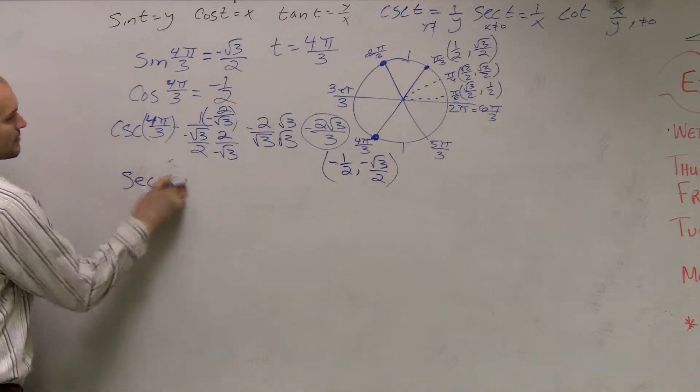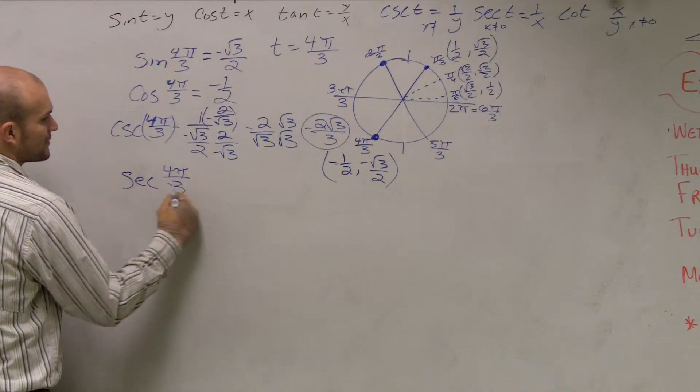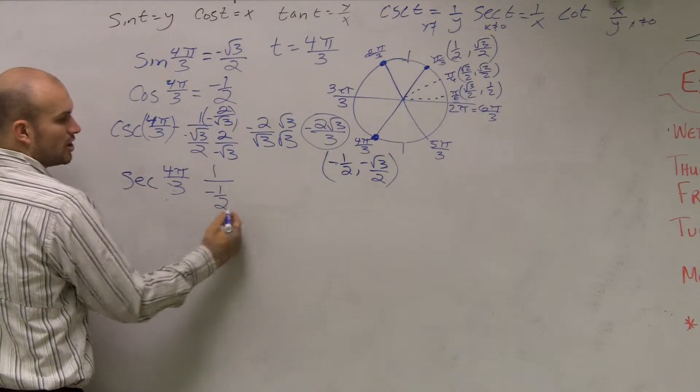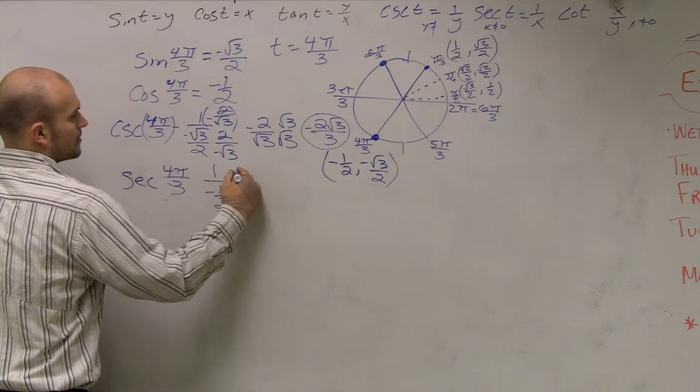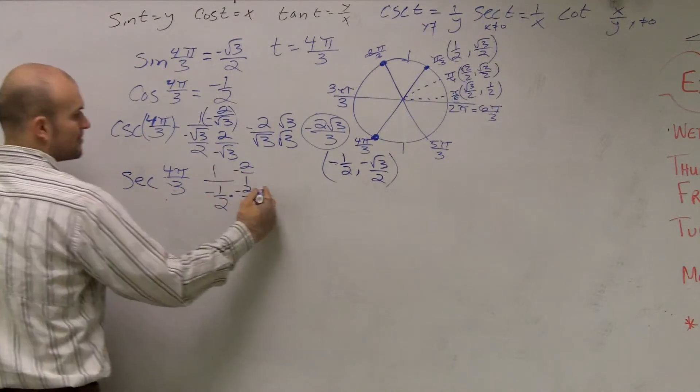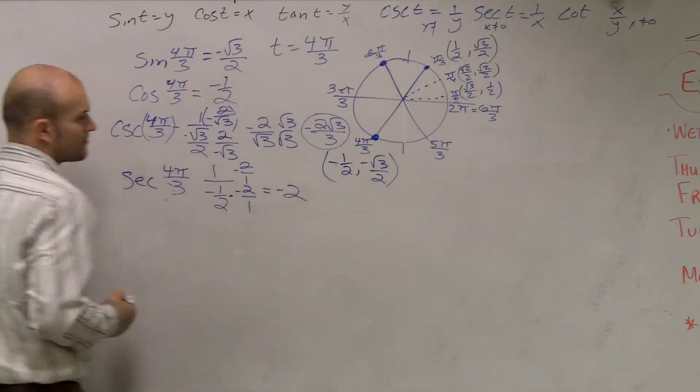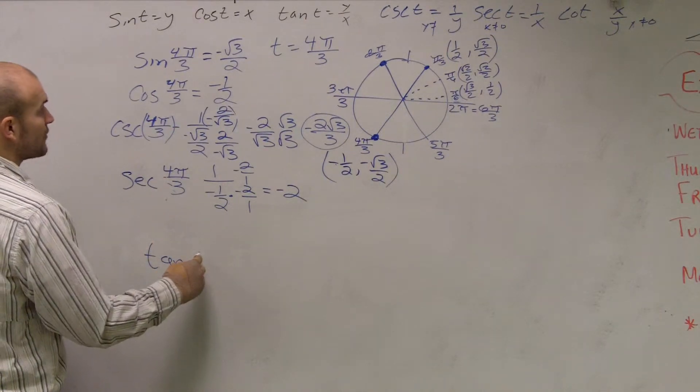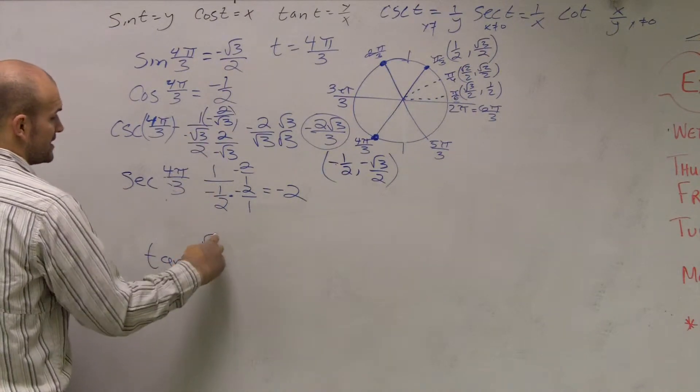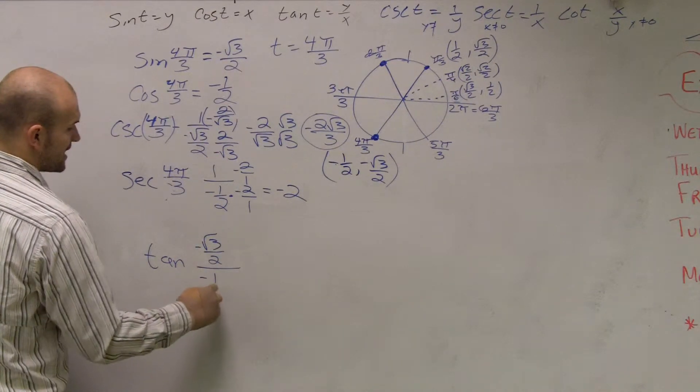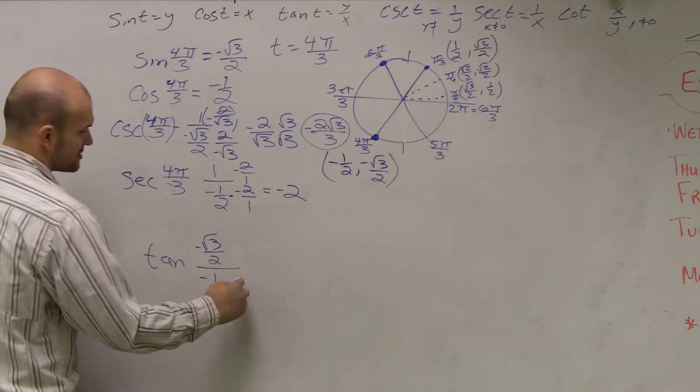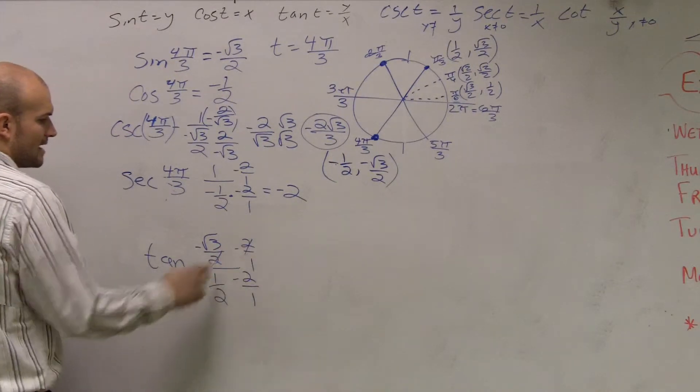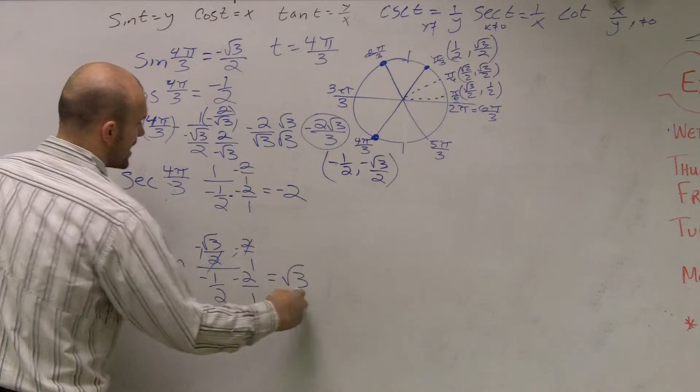Let's do secant is now 1 over x. So secant of 4π over 3 is going to give you 1 over negative 1 half, multiplied by the reciprocal. Ends up equaling... That's just going to equal negative 2. Alright? Then our favorite tangent is going to give you y over x. So I take my y, negative radical 3 over 2, divided by negative 1 half, multiplied by your reciprocals. My 2's will cancel out, as will my negative signs. So I'm just left with radical 3.